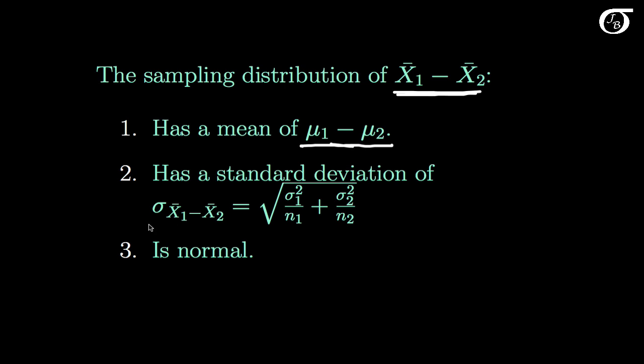The standard deviation of the sampling distribution of x1 bar minus x2 bar can be shown to be this quantity, the square root of the variance of the sampling distribution. And I derive that in greater detail elsewhere.